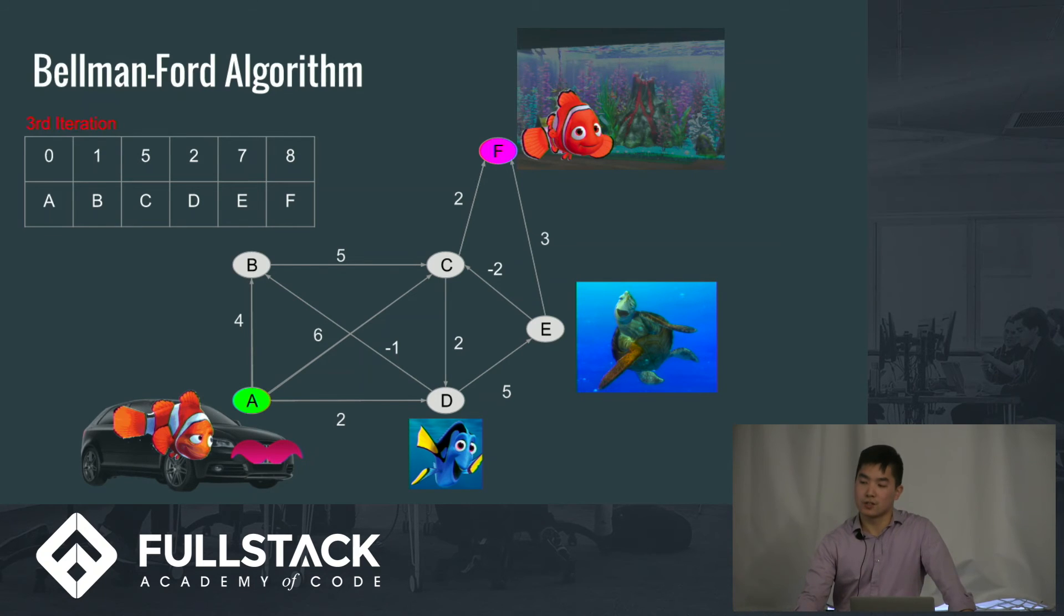The third loop, nothing changes. So we can actually break the algorithm right here. The five iterations I was talking about earlier is the max you have to do. But since the third loop isn't going to change anything, we no longer have to continue the program.